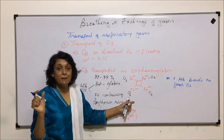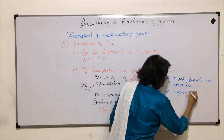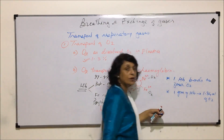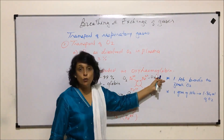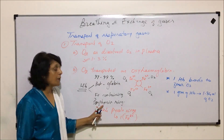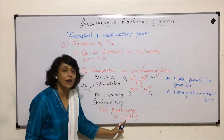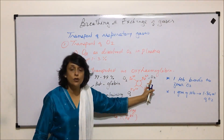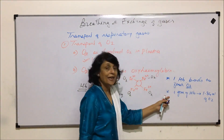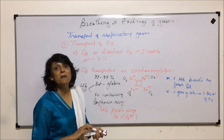This is molecule-number-wise: one hemoglobin molecule to four oxygen molecules. If we talk in terms of grams, one gram of hemoglobin can transport 1.34 milliliters of oxygen. So if 100 milliliters of blood has 15 grams of hemoglobin, then 1 gram carries 1.34 mL, so 15 grams would carry 15 × 1.34 milliliters — that gives us the actual volume of oxygen transported by 100 milliliters of blood.